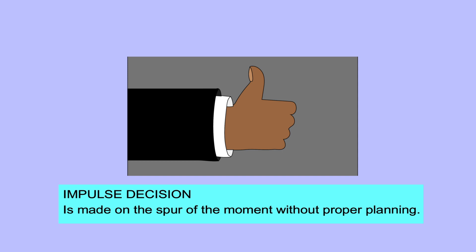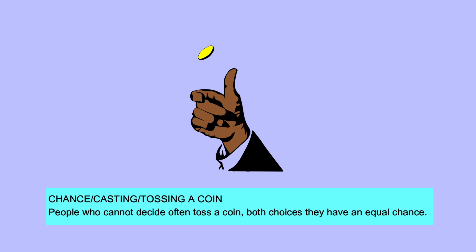An impulse decision is a decision made on the spur of the moment without proper planning. Chance, casting lots, or tossing a coin is used by people who cannot decide — both choices have an equal chance.